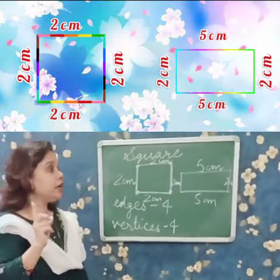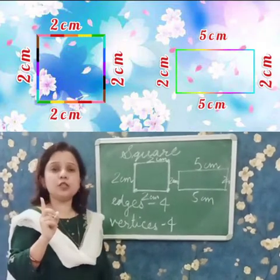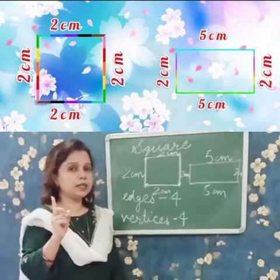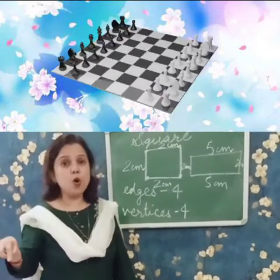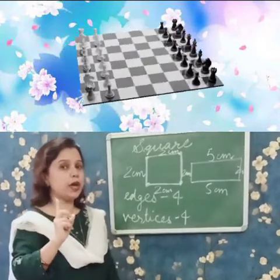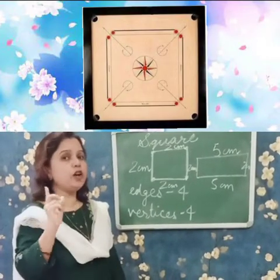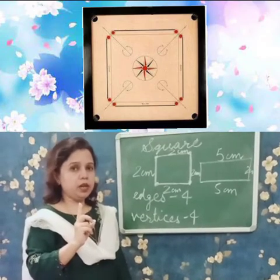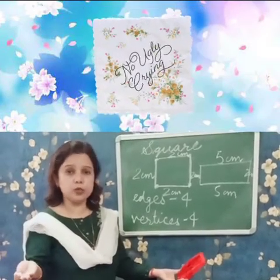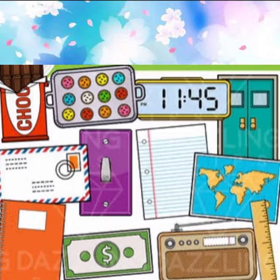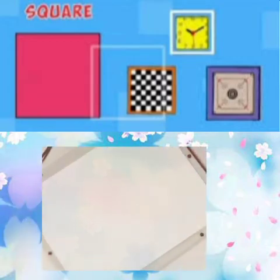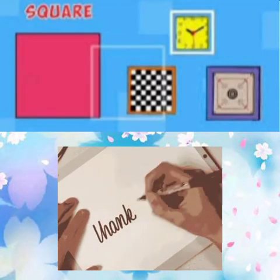Did you understand, children? Can you give me some examples of square-shaped objects? You all play chess — a chess board is of square shape. A carrom board is also of square shape. Now children, try to find out some more objects which are rectangular or square in shape. Thank you children, see you in the next class.